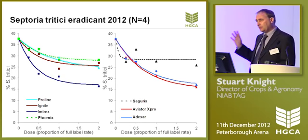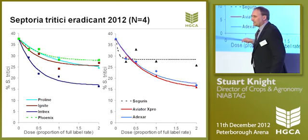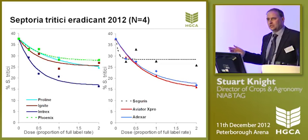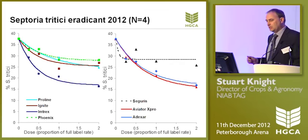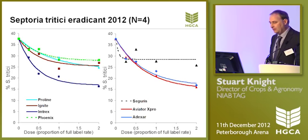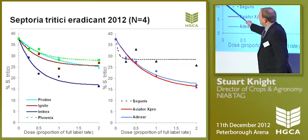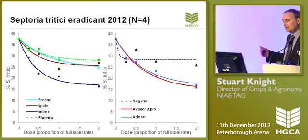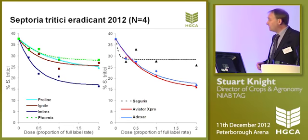Our Proline and Ignite provide our standards. If you look at the Phoenix line — the green line — Folpet is largely a protective material, and while we can't perfectly distinguish between protective and eradicant control in these trials, we are getting some useful activity overall from the Phoenix. The straight SDHI line — fluxapyroxad, Intrex — is giving a very good level of eradicant activity against septoria, and we can deduce the SDHI is, in its own right, giving very useful eradicant control of septoria — slightly better than the azole standards.